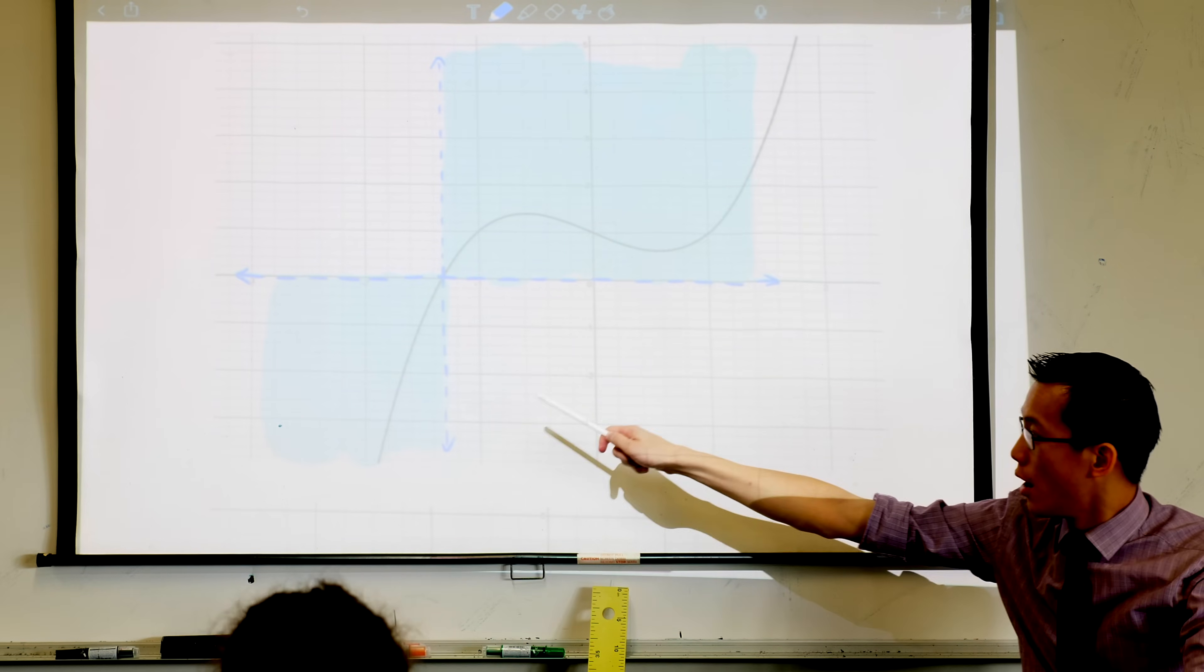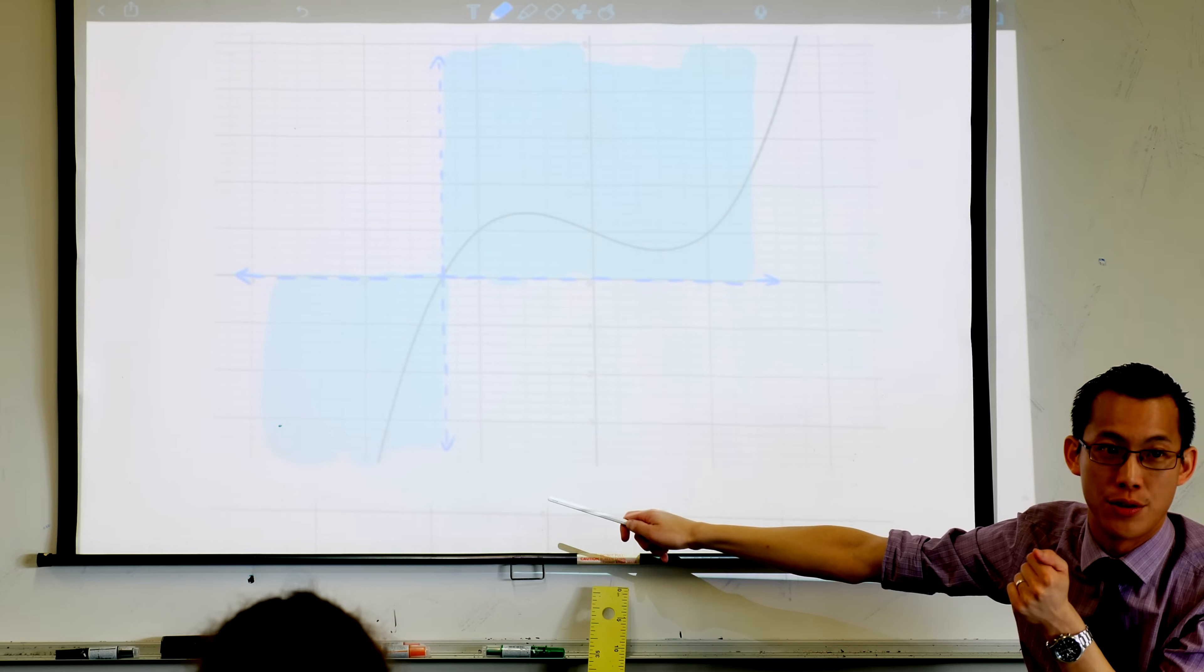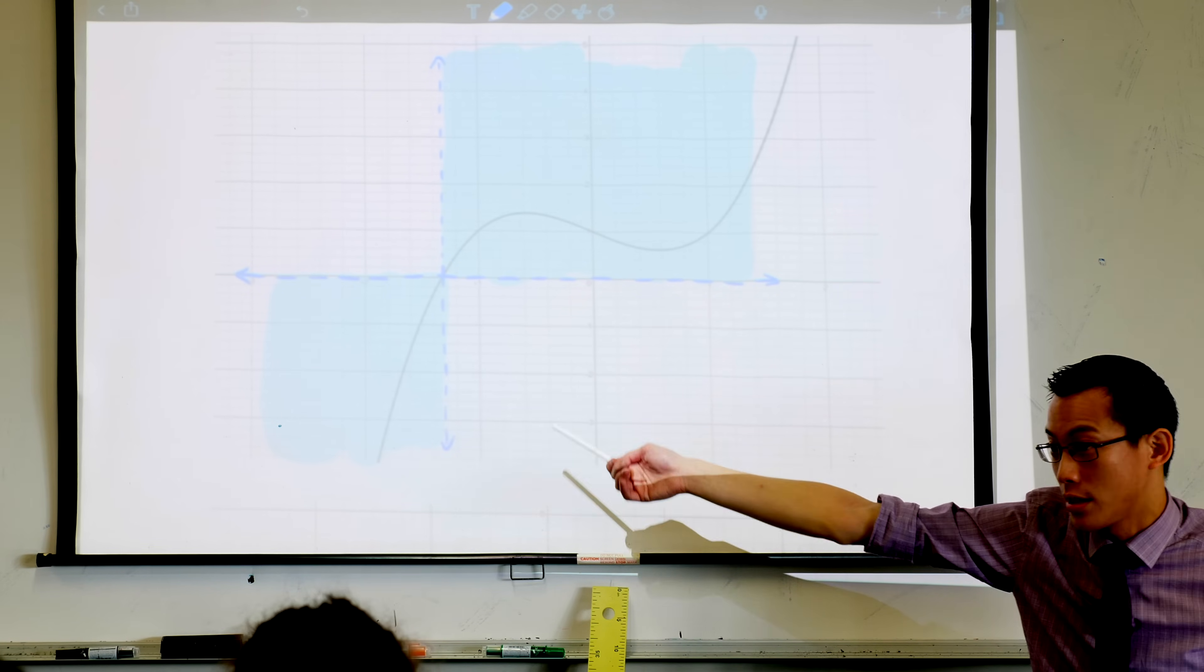Look over on the left. Over there, the original will have large negative values, so the reciprocal will be small negative values, but still negative. You can see I shaded it, right?